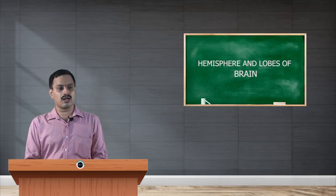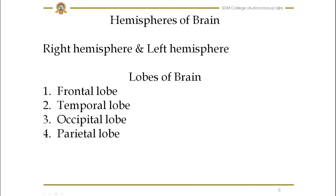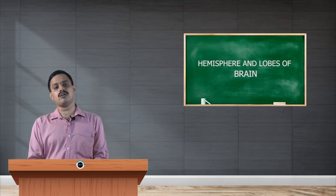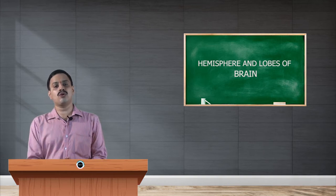The four cortexes are frontal lobe, temporal lobe, occipital lobe and parietal lobe. The cerebral cortex is divided into four lobes.